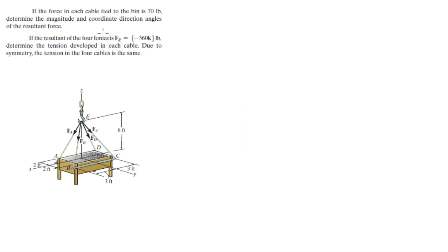Let me do these two problems. The first says: if the force in each cable tied to the bin is 70 pounds, determine the magnitude and coordination angles of the resultant force. Then they change it up and say: if the resultant force is given, what is the tension developed in each cable?